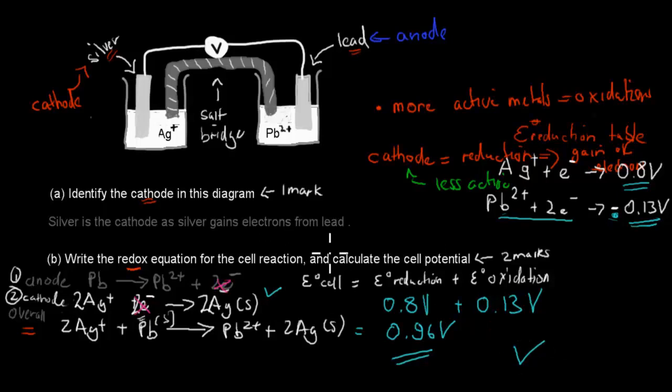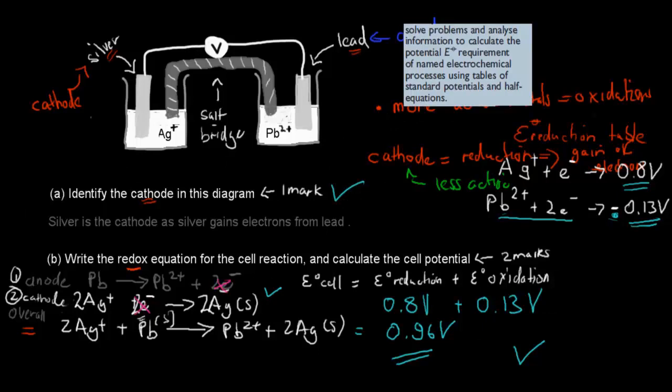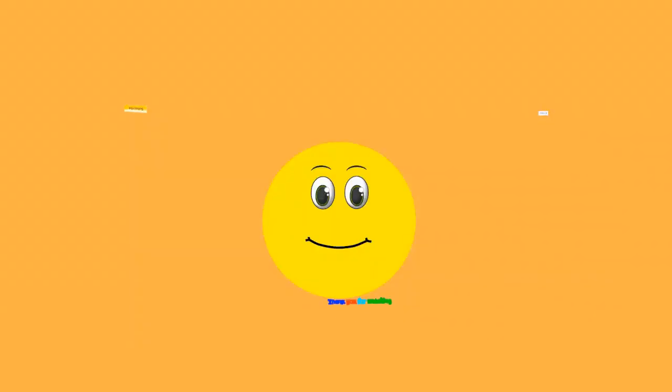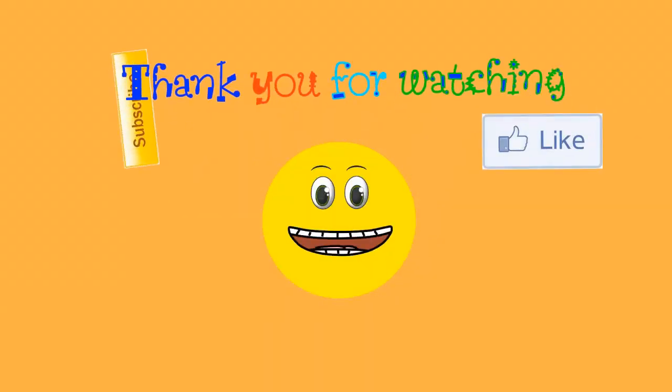So, one mark for this, one mark for this, and one mark for this, and it's 3 out of 3. And where these came from, is from this dot point. Solve problems and analyze information to calculate the potential e-requirements of a named electrochemical process using tables of standard potential and half equations. So, the half equation part came from that one, and the cell potential part calculations also came from this dot point. Whereas, the identified cathode in this diagram just came from the one where we had to define the different terms. So, I hope that was useful. Thank you for watching.